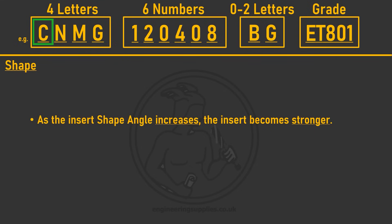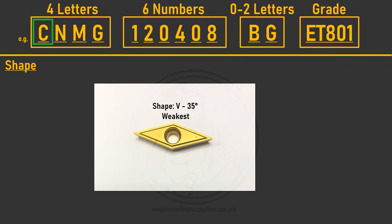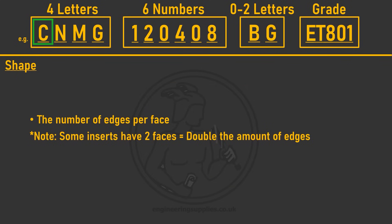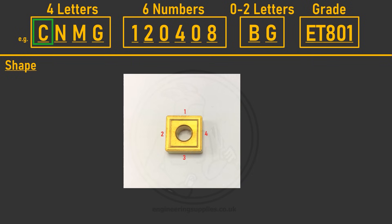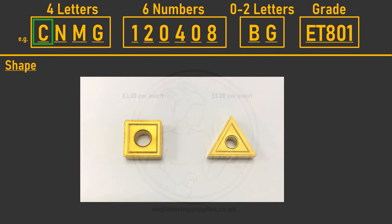When picking an insert shape there are a few factors to consider. The wider the angle, the stronger the insert, with a round R-shaped insert being the strongest edge and a V-shaped 35 degree insert being the weakest. Also consider the number of usable edges per face — a square insert has four usable edges and a triangular insert has three, affecting cost per edge significantly.